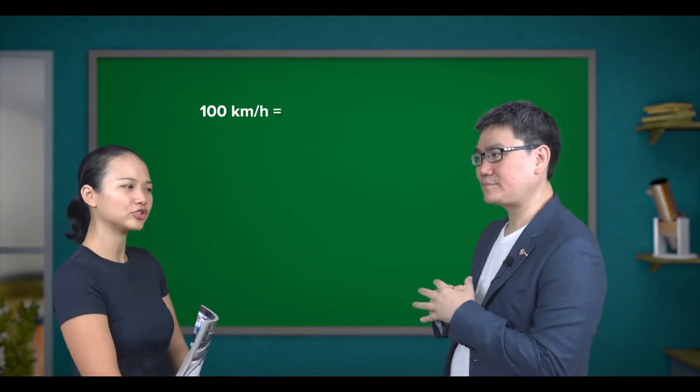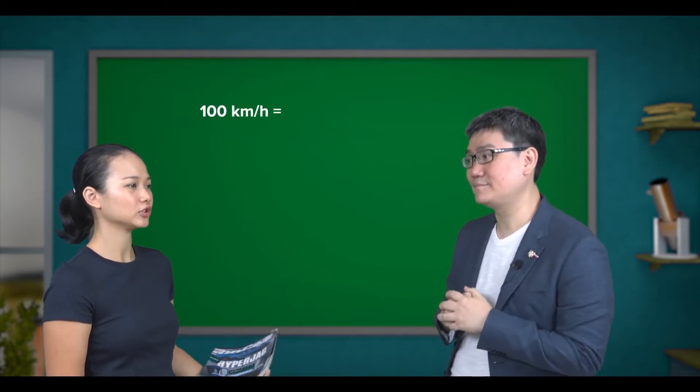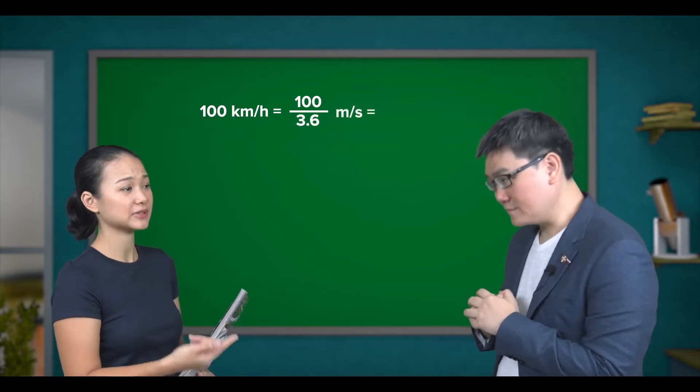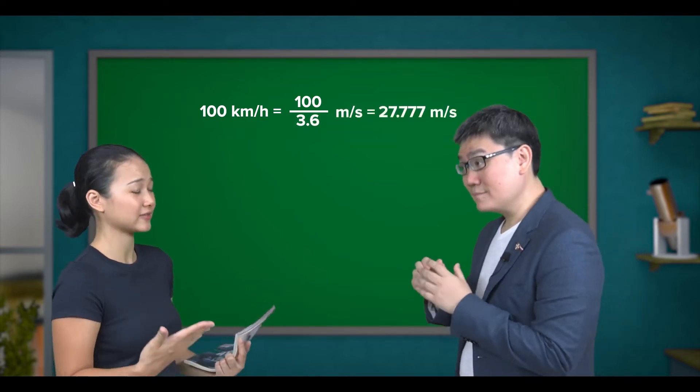Alright, so 100 km per hour is equal to 100 divided by 3.6 meters per second equals 27.77 meters per second.